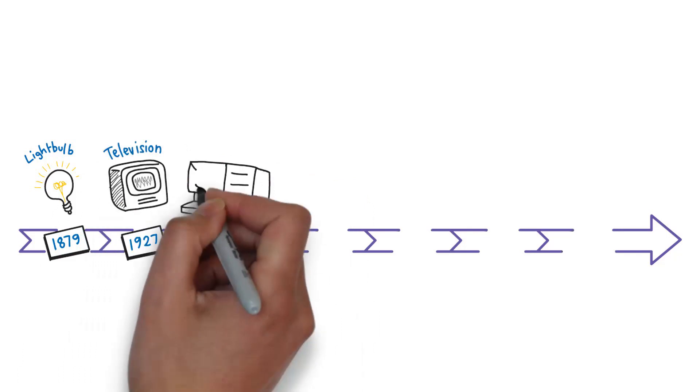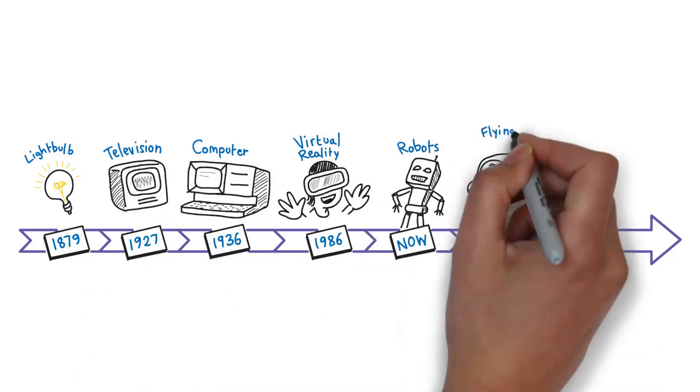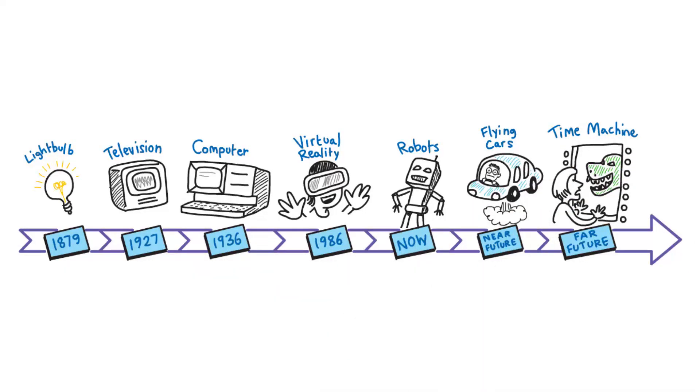As science and technology have developed, we are more able to predict and quantify the future. But there is still no certainty in what might happen tomorrow, next year, or years from now.